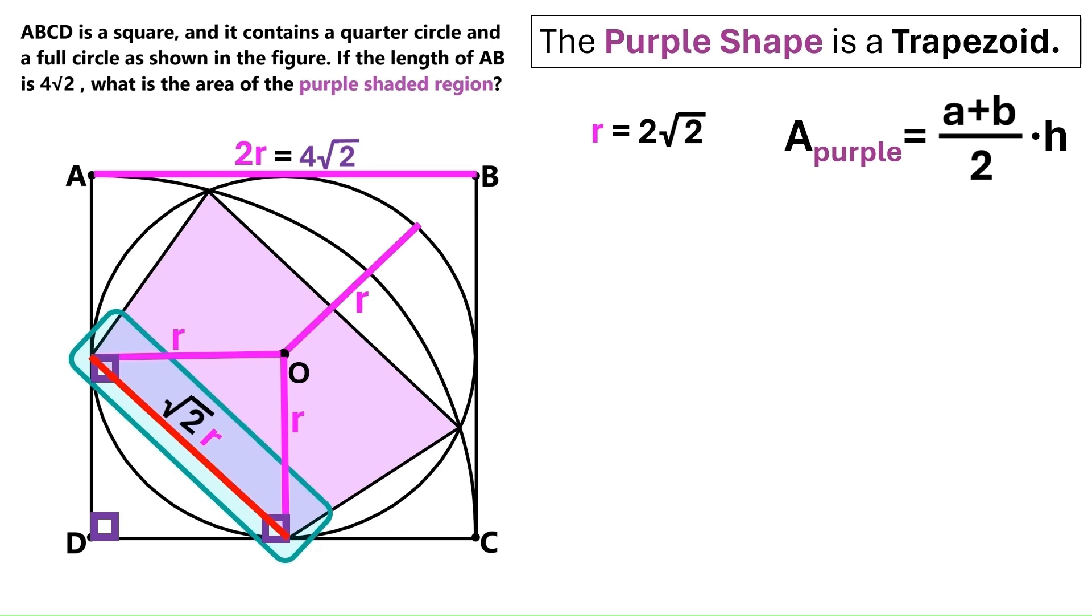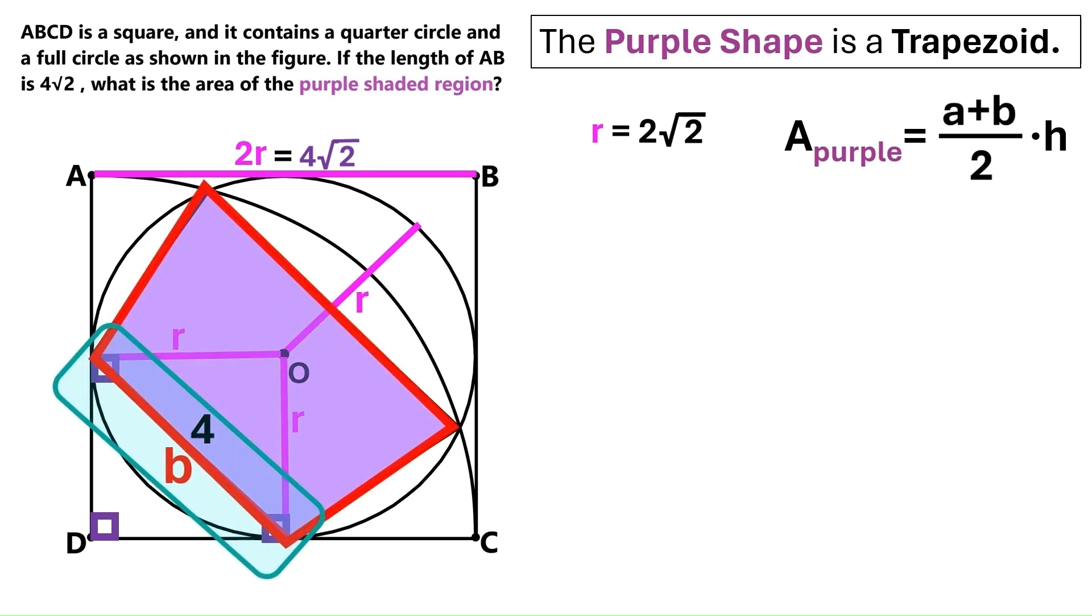Now a square's diagonal length is always root 2 times its side length, and we know R is 2 times root 2, so let's substitute this R with that, and the diagonal turns out to be 4, which is actually the side B of the purple trapezoid. So let's change this B to 4.